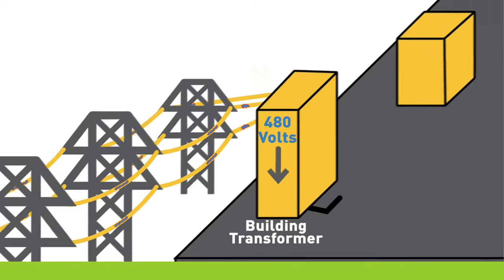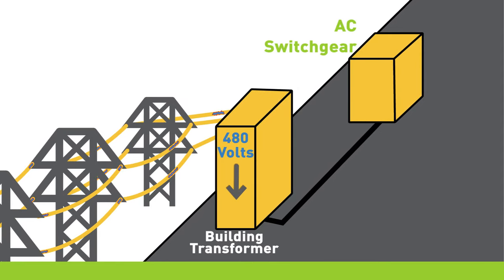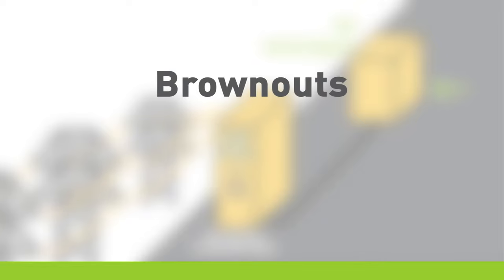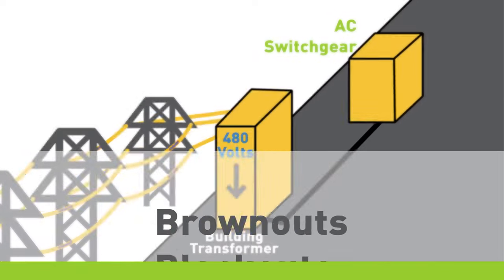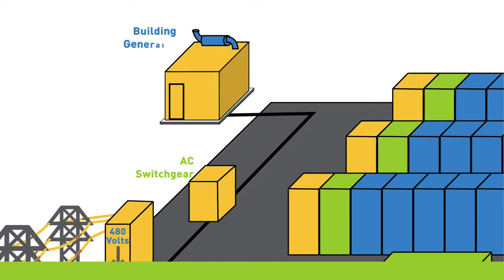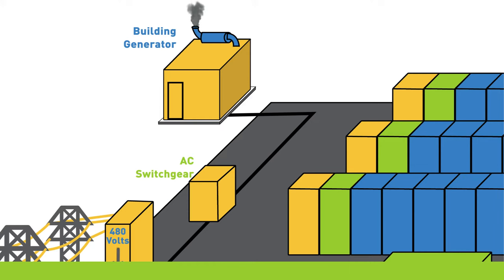The power then passes from the transformer through an automatic transfer switch or switches. The purpose of this switch is to sense when sufficient power is no longer coming from the utility due to brownouts, blackouts, or short-term power fluctuations. If the utility power is interrupted, the automatic transfer switch will signal the backup generators to turn on. The generators will start powering up to deliver electricity for the data center equipment.